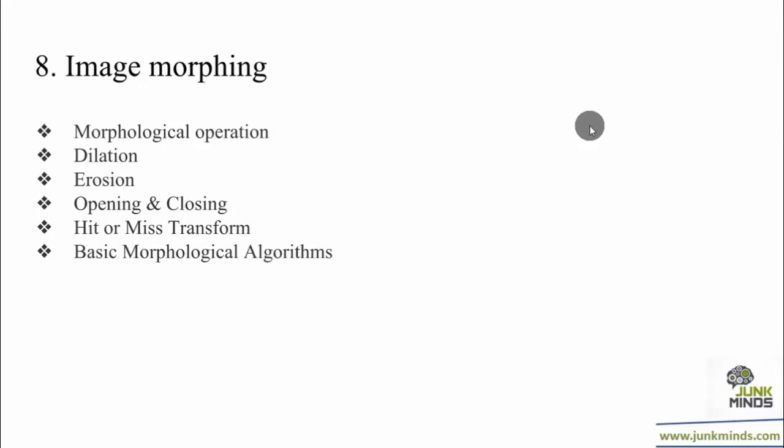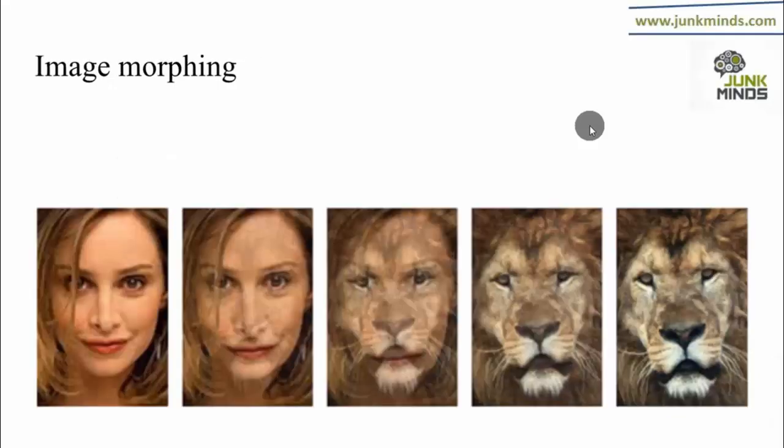In this series, we will learn about some of the morphological operations: dilation, erosion, opening and closing, hit or miss transform, and some basic morphological algorithms. Morphological image processing is a collection of non-linear operations related to the shape, morphology, or features in an image.